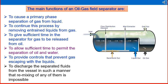The main functions of an oil and gas field separator are: to cause primary separation of gas from liquid; to continue this process by removing entrained liquid from gas; to give sufficient time for gas to be released from oil; to allow sufficient time for separation of oil and water; to provide controls that prevent gas escaping with the liquid; and to discharge the separator fluids from the vessel in such a manner that remixing is impossible.